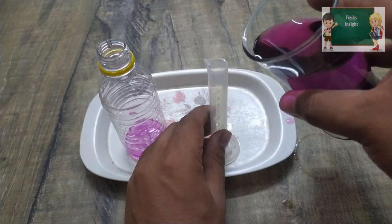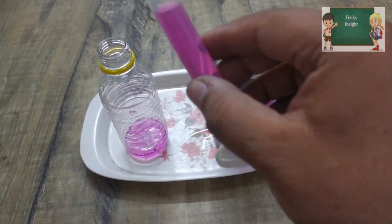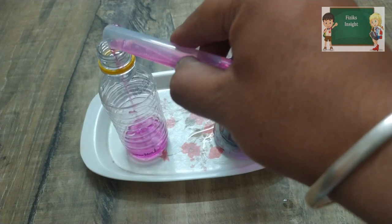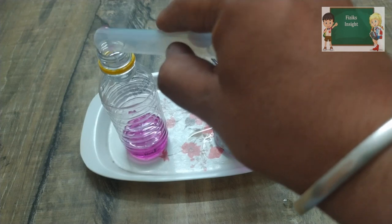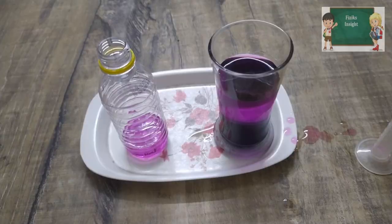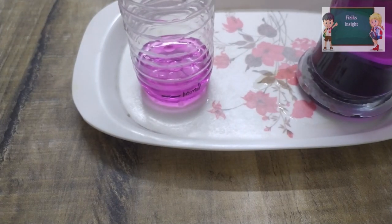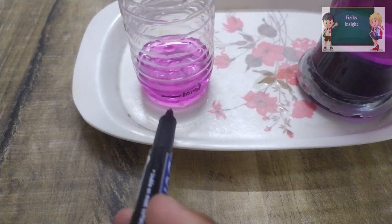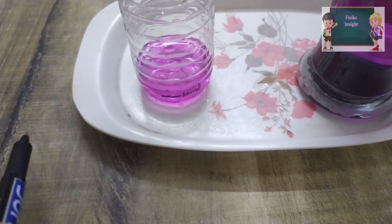Add the next 10 ml of liquid to the bottle and again make a mark. Now this mark indicates the capacity of the cylinder at 20 ml.